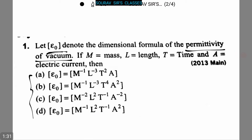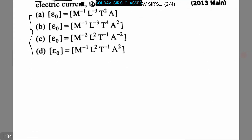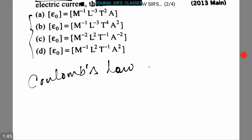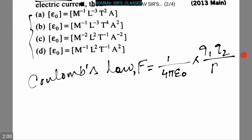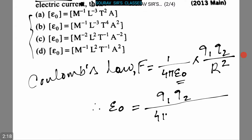Let's proceed to the solution. From Coulomb's law, we can write that F = 1/(4πE0) × Q1Q2/R². From this, we can rewrite it as E0 = Q1Q2 / (4π F R²).